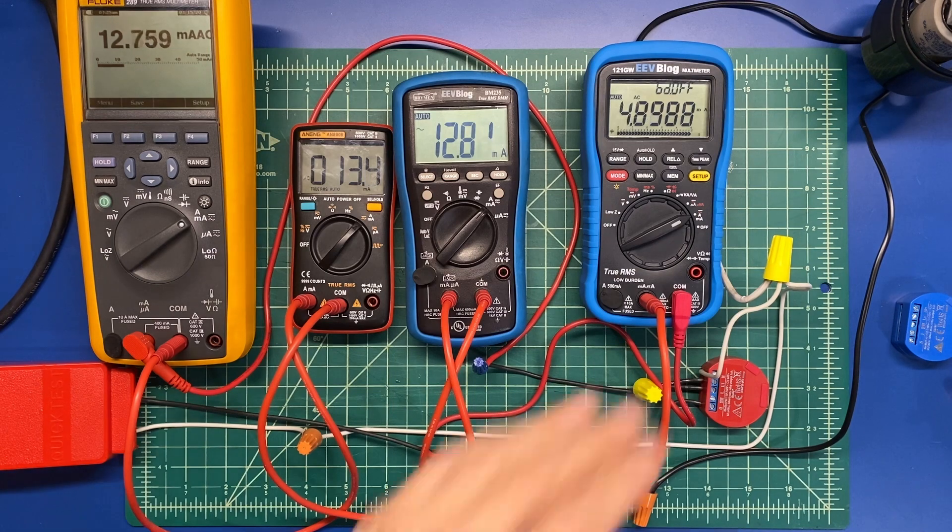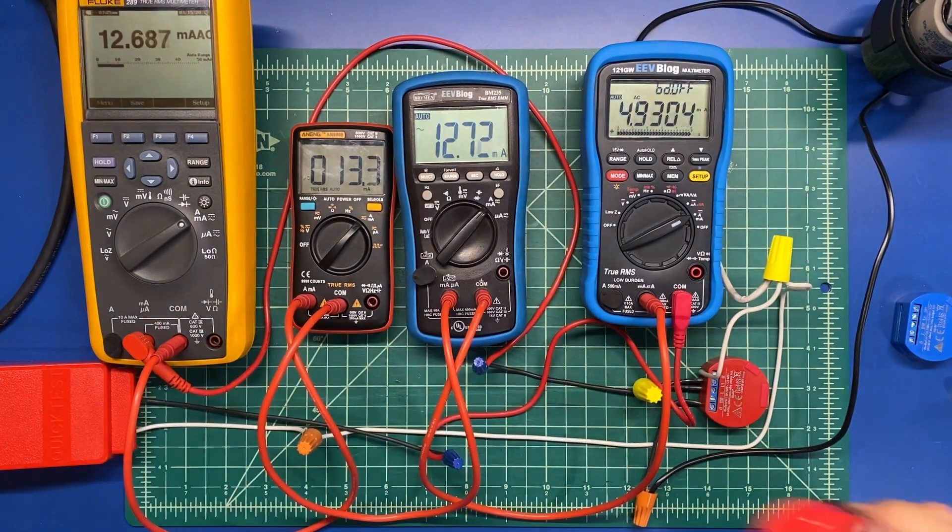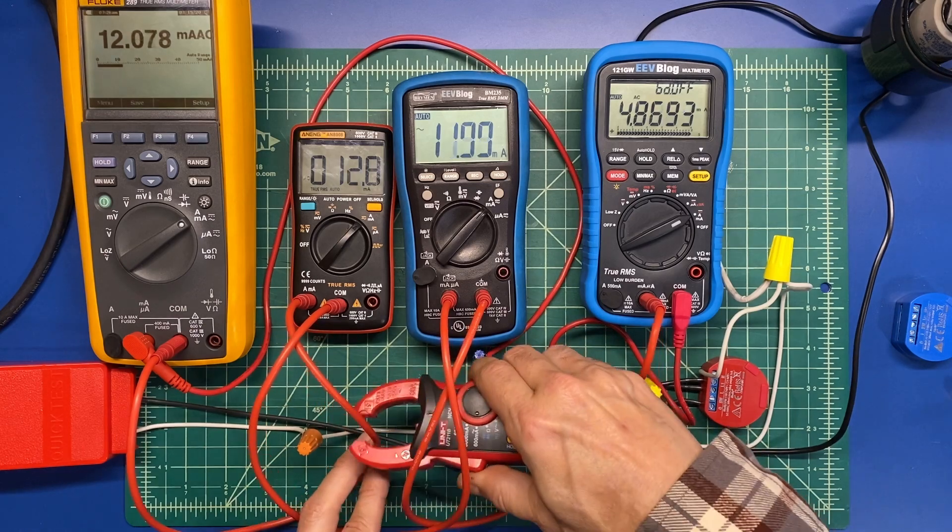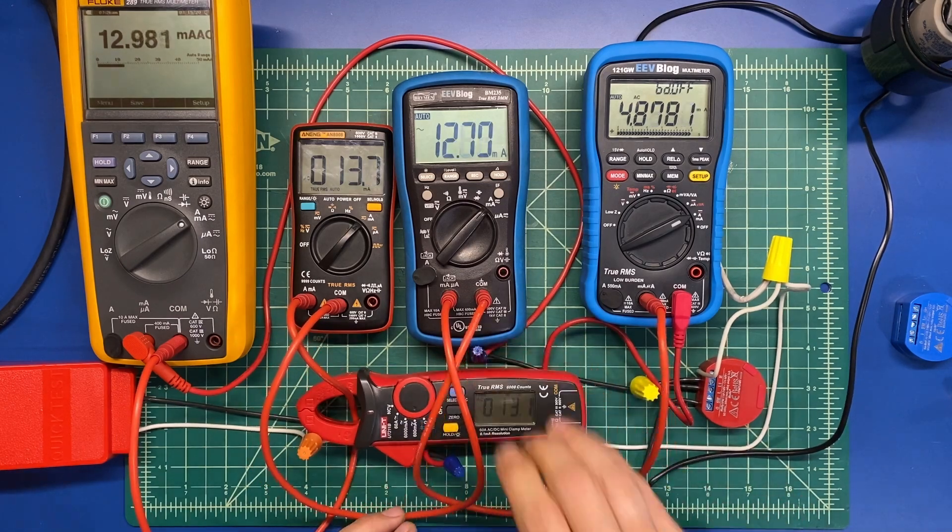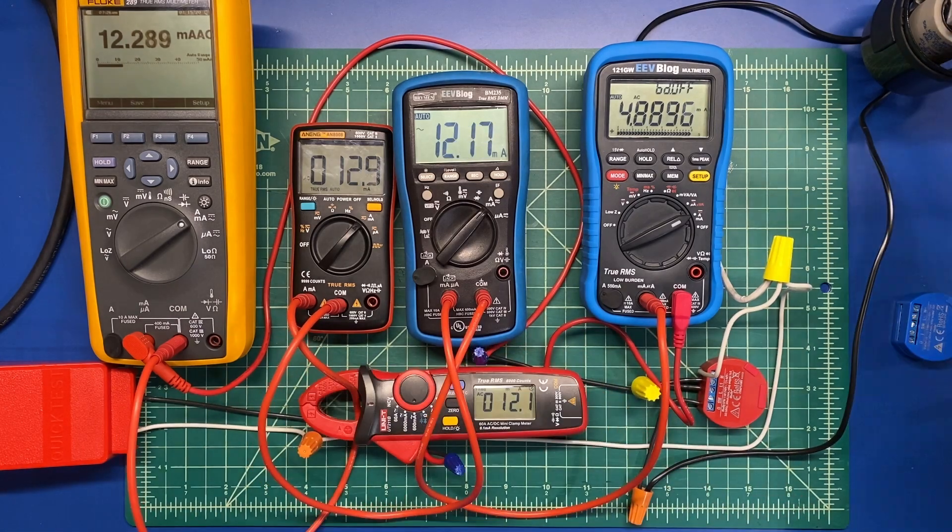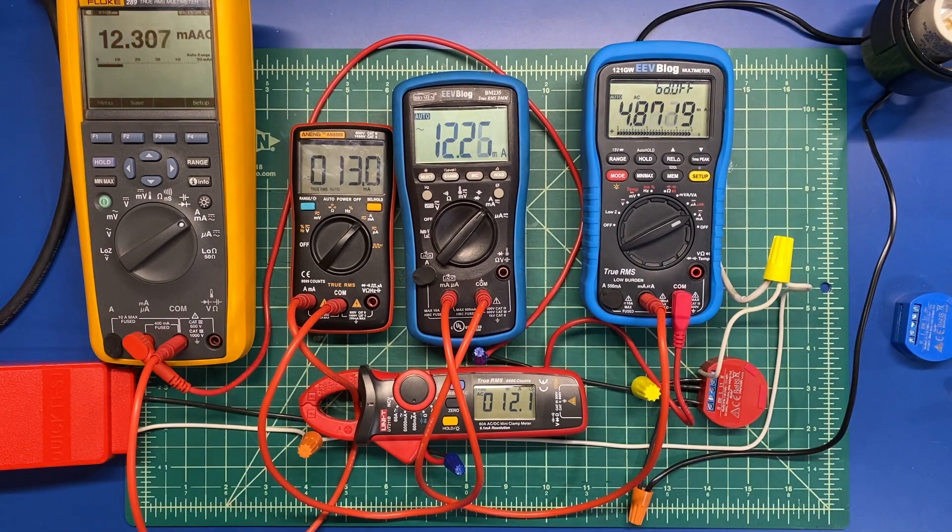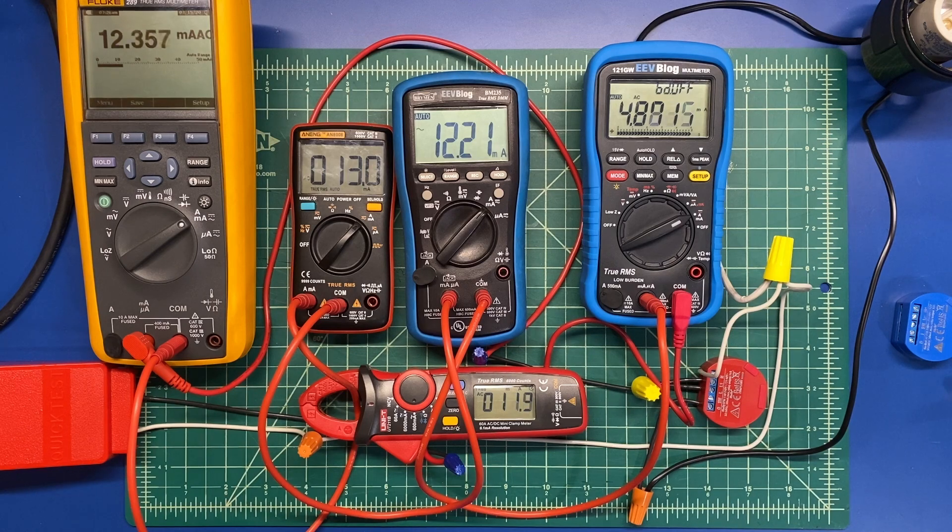As you can see, every one of them absolutely had no problem except for the 121 GW. If I pick any random loop at this point, you also see that my clamp agrees.